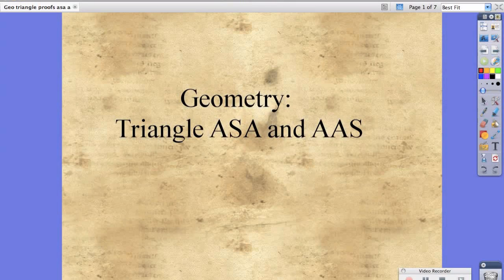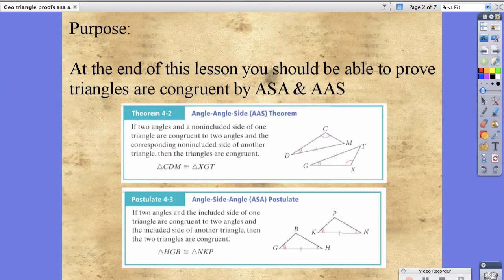Hello students. Today in your geometry class, we're going to be solving triangle proofs using ASA and AAS. At the end of this lesson, you should be able to prove triangles are congruent by using ASA and AAS, or angle-angle-side and angle-side-angle. Theorem 4.2 states that if two angles and a non-included side of one triangle are congruent to two angles and the corresponding non-included side of another triangle, then the triangles are congruent.